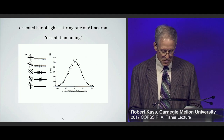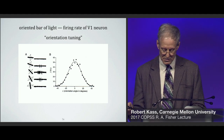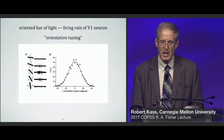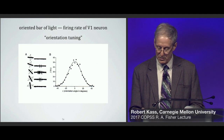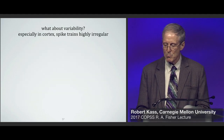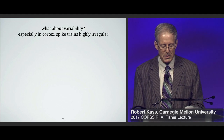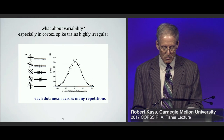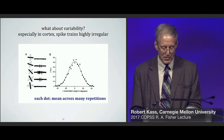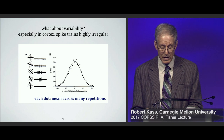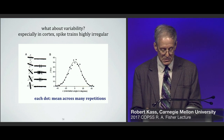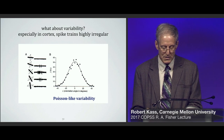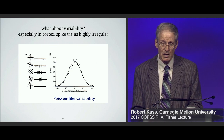Much neurophysiology and much statistics is aimed at figuring out how neural firing rate is related to behaviorally relevant variables. But what about variability? Especially in the cortex, spike trains are highly irregular. In the figure on the right, each dot represents the mean firing rate across many repetitions of the experiment — many repeated trials. You'll notice the Poisson-like tendency for the variability to increase with the mean, which is also extremely common.